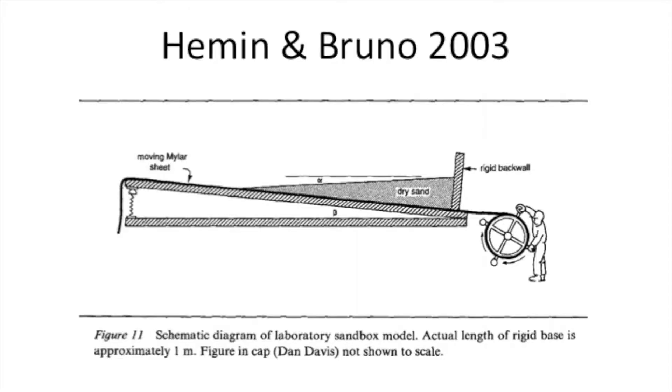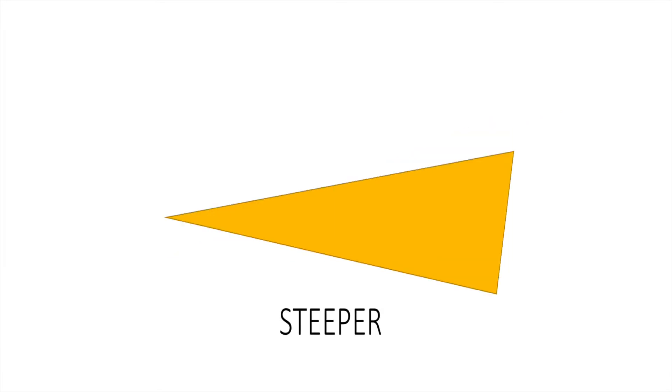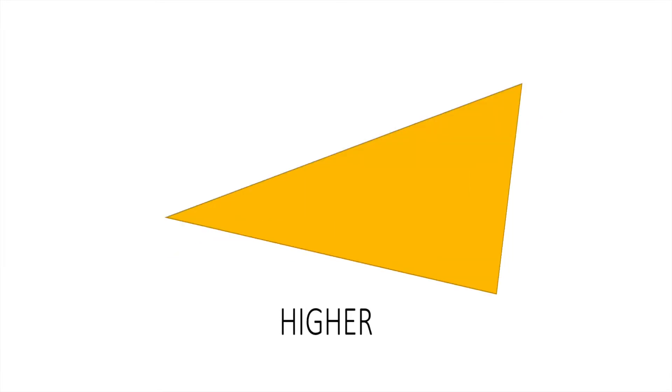We want to observe the effect of the décollement dip on the formation of an accretionary prism. According to a study conducted by Hemmin and Bruno in 2003, we should expect a wedge that is shorter, steeper, and higher with a larger dip of the décollement.